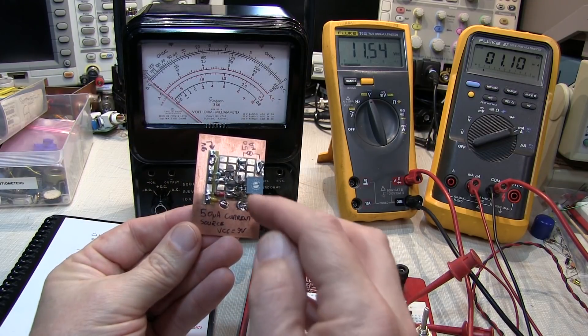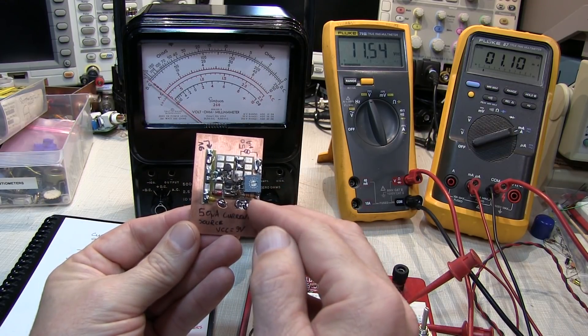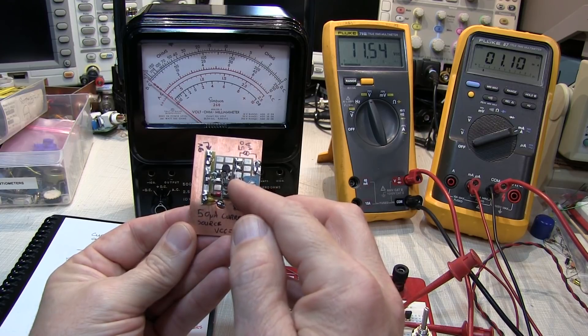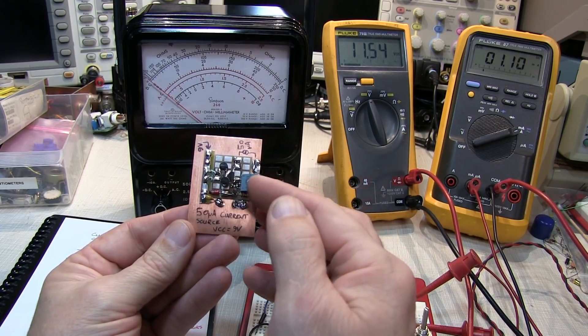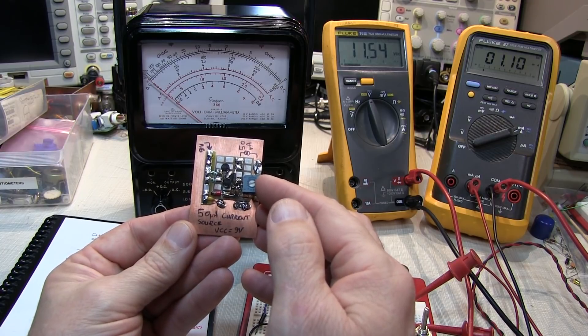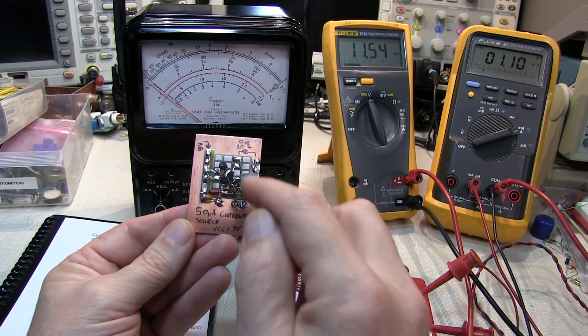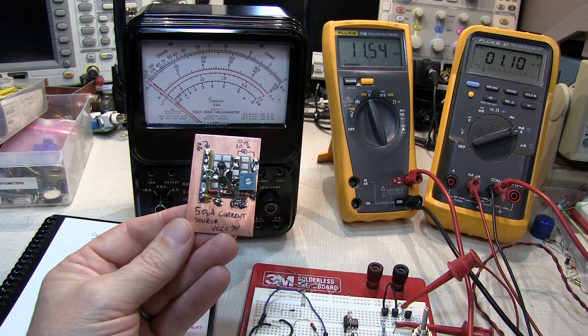Now several viewers asked for more details on the Wilson current mirror. Before we can actually get into that, we need to review current mirrors and output impedance and something called the early effect, or the early voltage, before we actually talk about the benefits that the Wilson current mirror delivers.